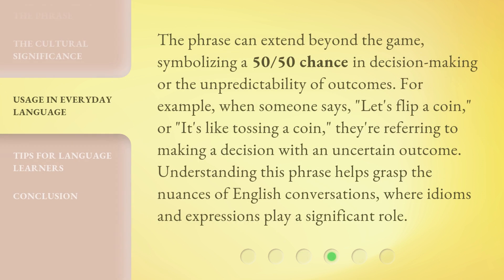The phrase can extend beyond the game, symbolizing a 50-50 chance in decision-making or the unpredictability of outcomes. For example, when someone says 'let's flip a coin' or 'it's like tossing a coin,' they're referring to making a decision with an uncertain outcome. Understanding this phrase helps grasp the nuances of English conversations, where idioms and expressions play a significant role.